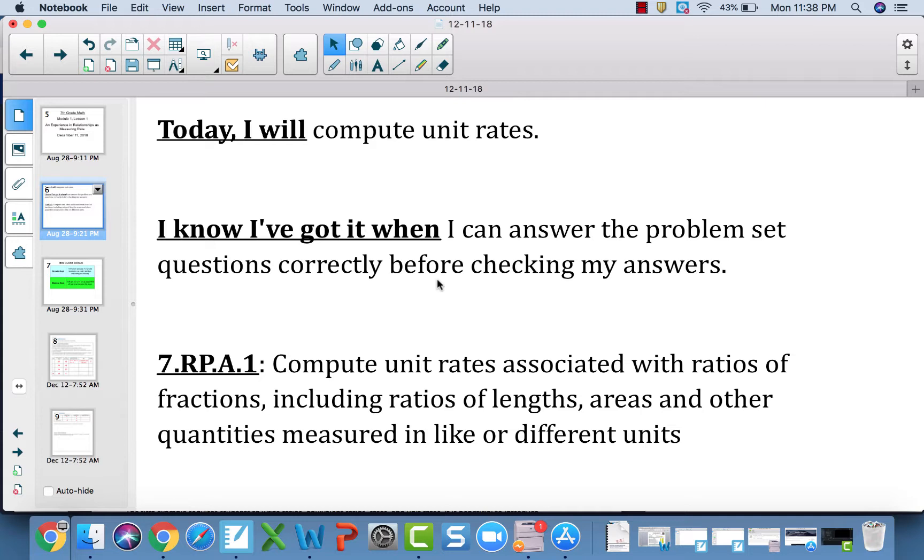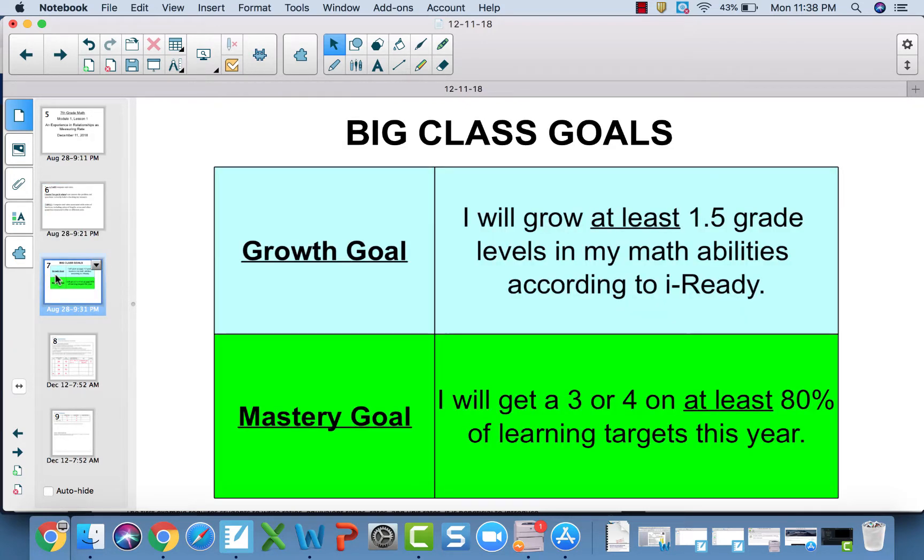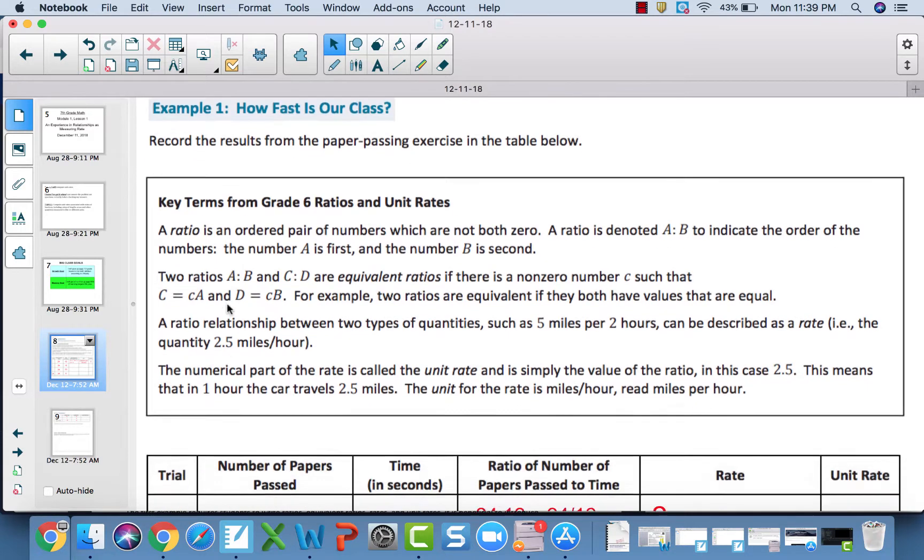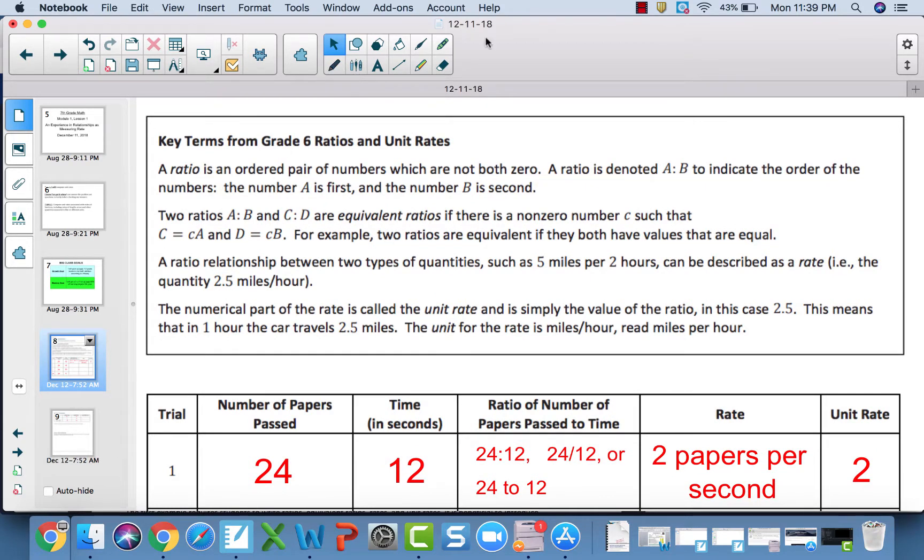The standard is 7.RPA1: compute unit rates associated with ratios of fractions, including ratios of lengths, areas, and other quantities measured in like or different units. Our big goals are one and a half grade levels when you take your iReady at the end of the year, and at least 80% mastery on this year's objectives. Lesson 1 with 7th grade is a review of a lot of stuff we learned about ratios and unit rates in 6th grade. I'm gonna read through this box to reiterate some stuff we've gone over previously.